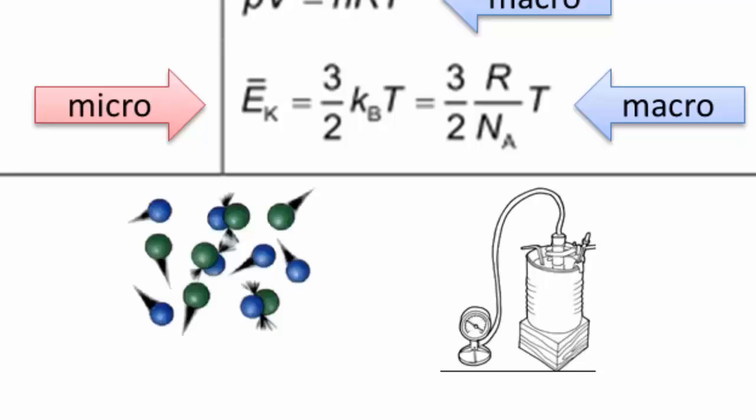This equation is very important because it basically gives us the link between what we're able to measure macroscopically to what is actually going on microscopically, the link between the temperature and the average kinetic energy of the particles. If you double the temperature, you are going to double the average kinetic energy of the particles.